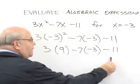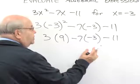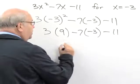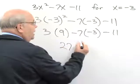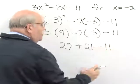Now we go from left to right doing any multiplication or division, in this case there is no division. 3 times 9 is 27, negative 7 times negative 3 is plus 21. And we have now, in our final step,